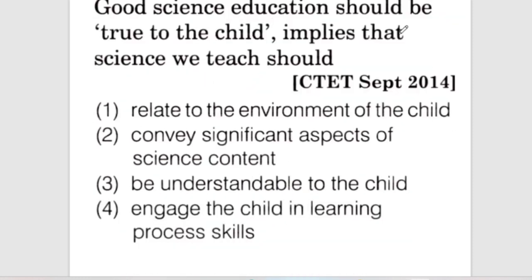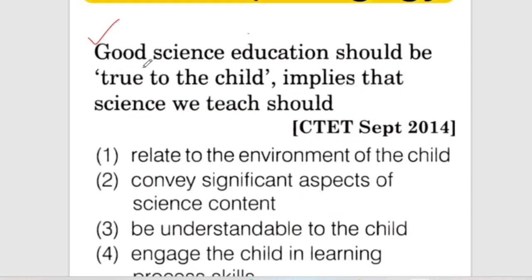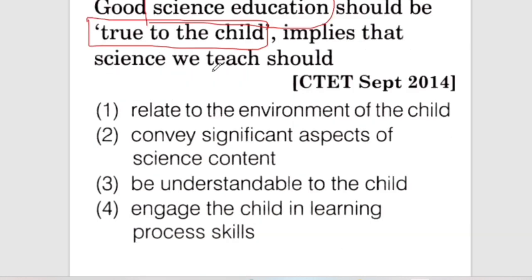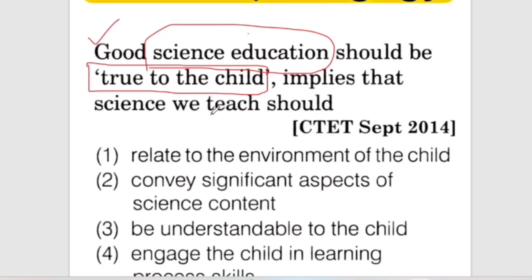Good science education should be true to the child. This implies that the science we teach should be relevant to the child. How do we teach true-to-child science education? That is the question we discuss. Good science education should be true to the child — it is important to learn about science with teachers.